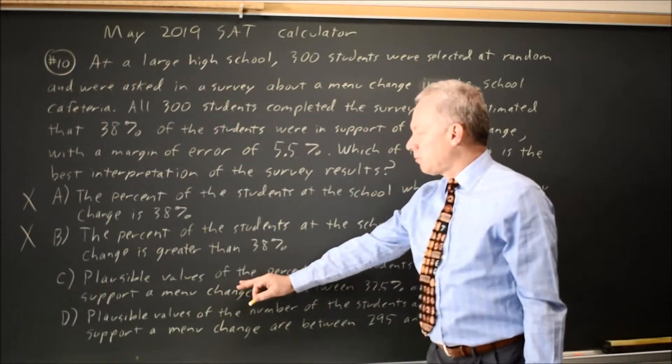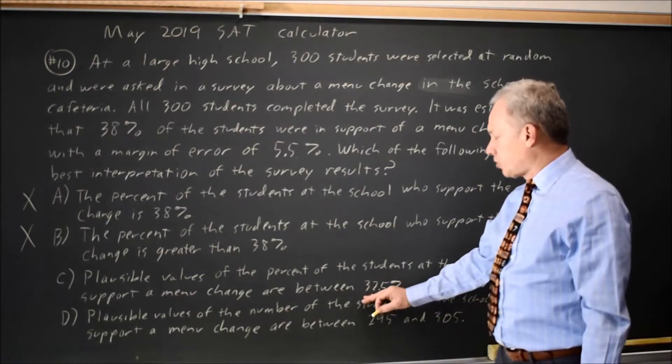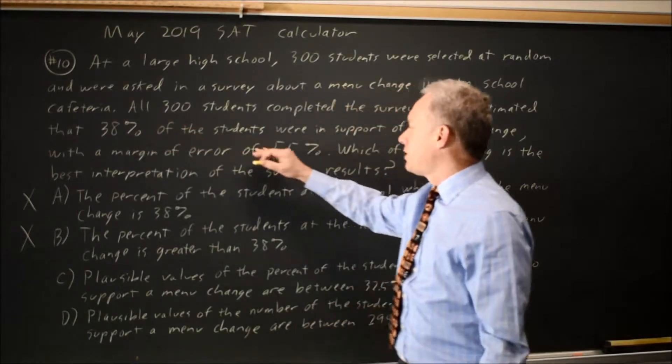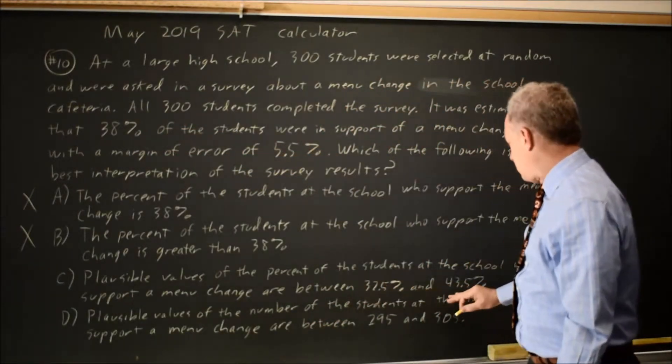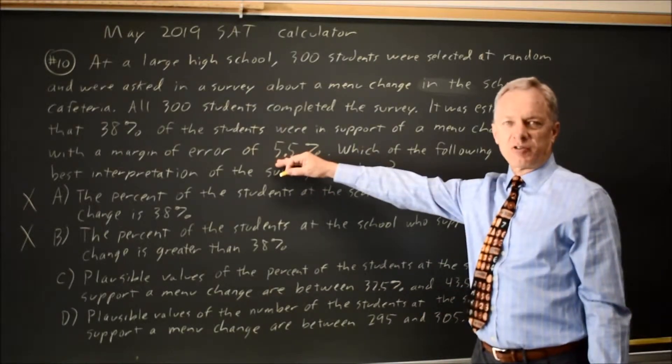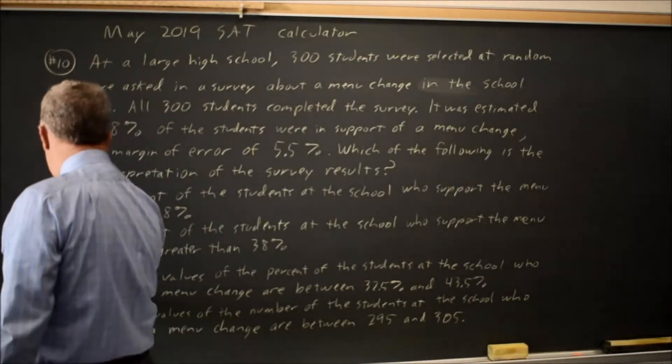Choice C: plausible values of the percent who support the menu change are between 32.5%, which is our best estimate 38% minus the margin of error, and 43.5%, which is 38% plus the margin of error 5.5%. So that is exactly what we mean by margin of error.